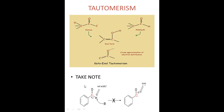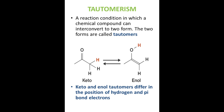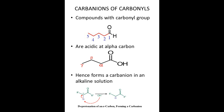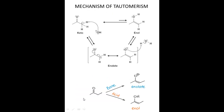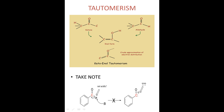Take note: when considering the acidity of a carbonyl compound like an aldehyde, the aldehyde hydrogen itself is not acidic — only the hydrogens on the alpha carbon are acidic. So for a structure like benzaldehyde, it has an alpha carbon but carries no alpha hydrogen. Therefore this reaction cannot proceed in a basic solution because there is no acidic alpha hydrogen. The only acidic hydrogens are those on the alpha carbon, which in this case benzaldehyde does not have. So benzaldehyde in a basic solution will proceed with no reaction.